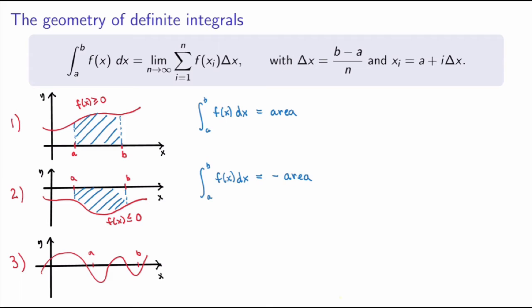In the general case where the function is partly positive and partly negative over the interval, we can apply the same reasoning. Say I have three different areas: r1, r2, and r3. Over sub-intervals where the function is positive, the definite integral calculates the area; where negative, it calculates minus the area. So the definite integral calculates the net area — adding areas with a plus sign when above the x-axis and a minus sign when below. In this case that gives minus r1 plus r2 minus r3.